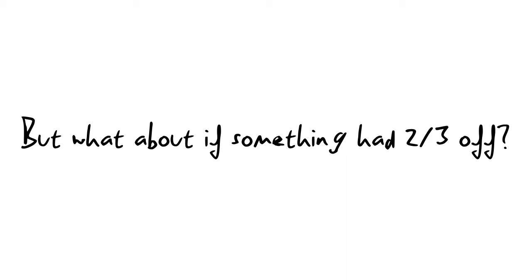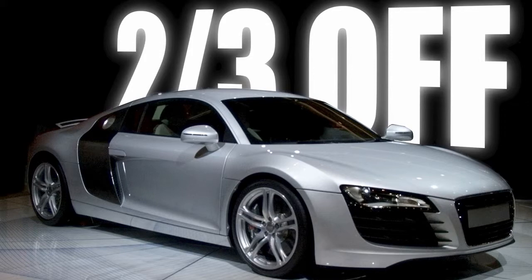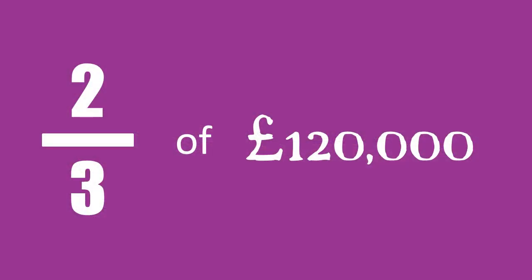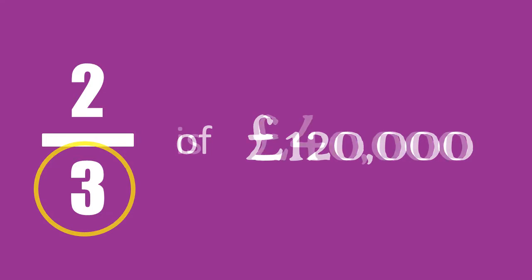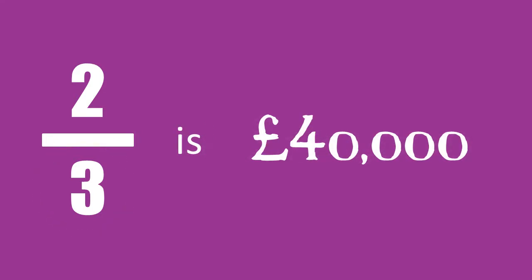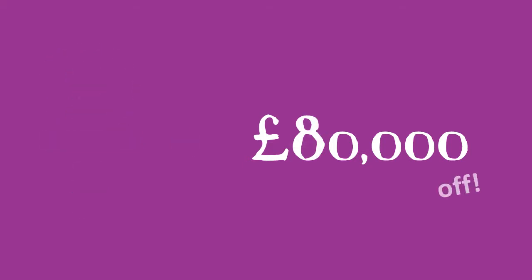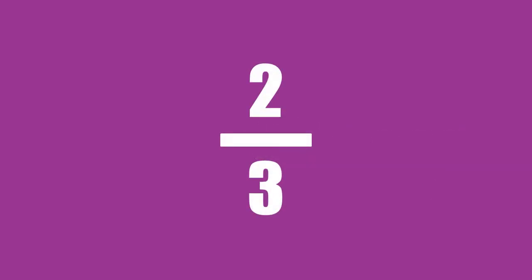But what about if you wanted two thirds of something? To work out this price, just look at the fraction. You know that there are three equal parts, and you have two of them. So you can work it out by dividing the number by three, then times it by two to give your answer. You divide by that bottom number, and then times it by the top number.